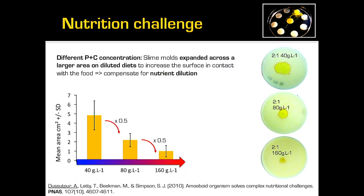After we challenged them with different concentrations — manipulating the amount of food without changing the ratio — we looked at how slime mold was growing in terms of mass and area. All slime molds reached the same mass across all concentrations, but the difference was in the area. On a very diluted diet the area was very large compared with a highly concentrated diet. So the slime mold copes with dilution by spreading a lot, but it does not grow more in terms of mass.